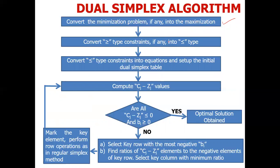Secondly, if you have a constraint in greater-than form, then we convert it to less-than-or-equal-to form by multiplying by minus one. If there is an equality constraint, we handle it in the normal form. Once we have all constraints in less-than-or-equal-to form, we create the standard form by adding a slack variable to every constraint. The slack variable indicates unused resources.